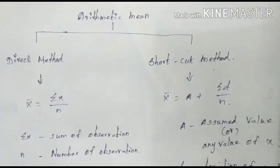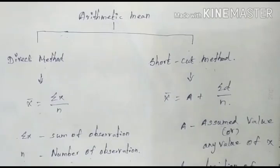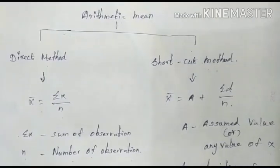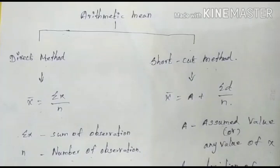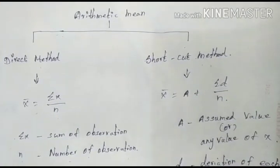In our economics book we have two methods. We have different methods — individual, discrete, and continuous. First is the direct method, and second is the indirect method.